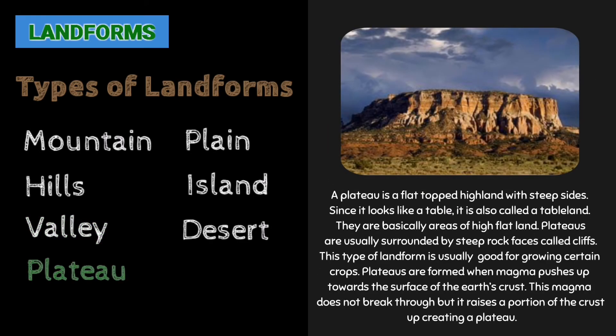A plateau is a flat-top highland with steep sides. Since it looks like a table, it is also called a tableland. They are basically areas of high, flat land, usually surrounded by steep rock faces called cliffs. This type of landform is usually good for growing certain crops. Plateaus are formed when magma pushes up towards the surface of the Earth's crust but does not break through — it raises a portion of the crust, creating a plateau.